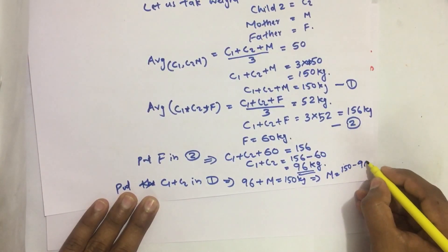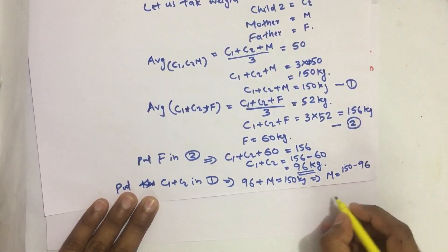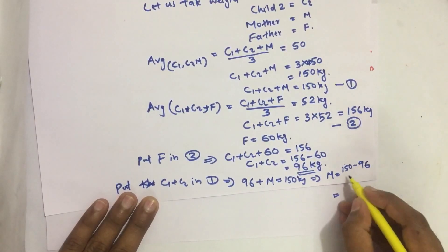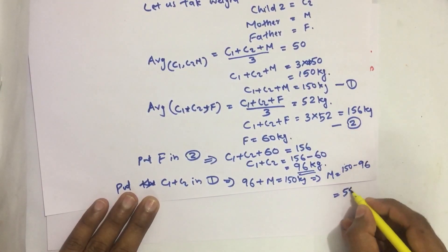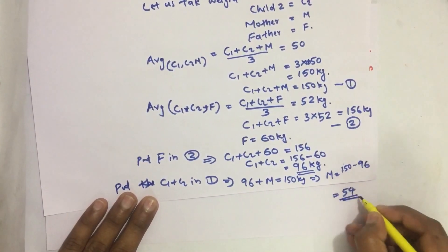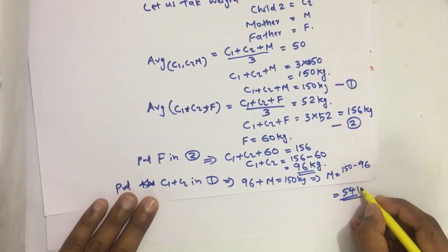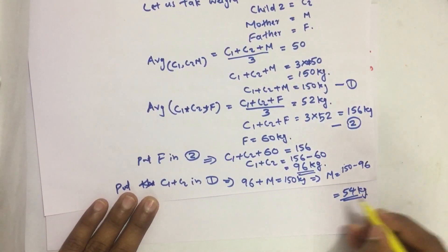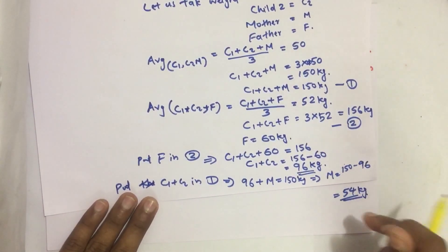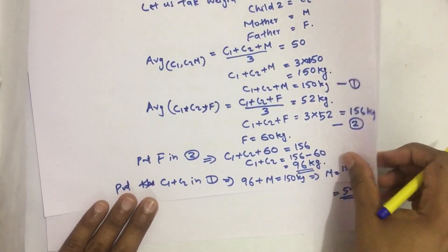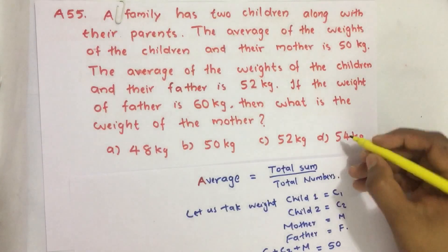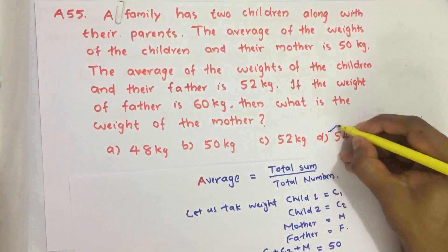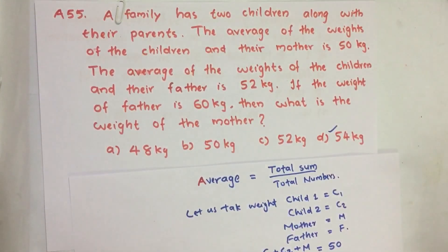M equals 54 kilogram. So mother's weight is 54 kilogram. Our answer is option number D: 54 kilogram.